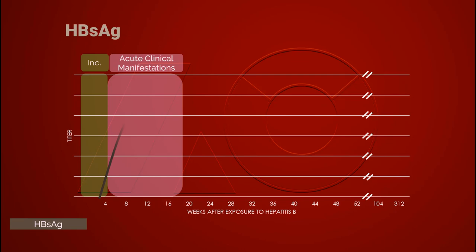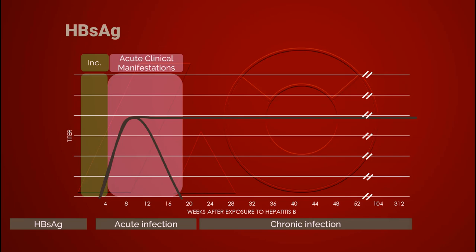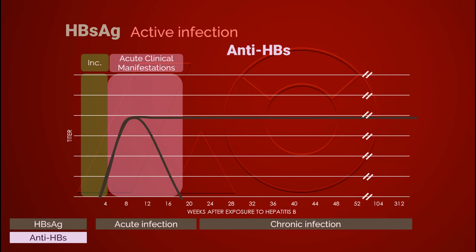The first antigen is hepatitis B surface antigen. It usually starts rising about one month after exposure to the hepatitis B virus, peaks at two months, and lasts for five months. Hepatitis B surface antigen can be detected in both the incubation period and acute hepatitis stage. If hepatitis B surface antigen is present in a blood sample six months after exposure, chronic hepatitis B is indicated. Whether acute or chronic, the presence of hepatitis B surface antigen indicates an active infection.